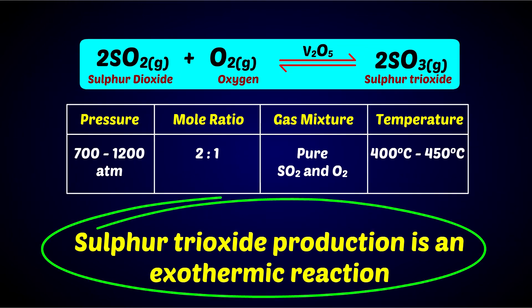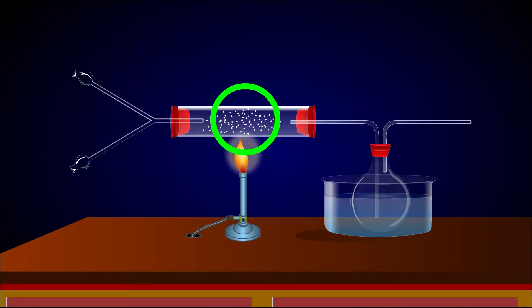Sulphur trioxide production is an exothermic reaction. An optimum temperature of nearly 400°C to 450°C is maintained to favor the equilibrium.